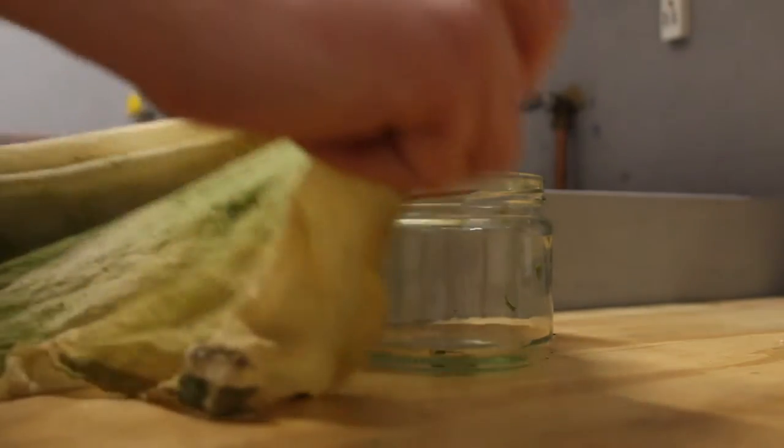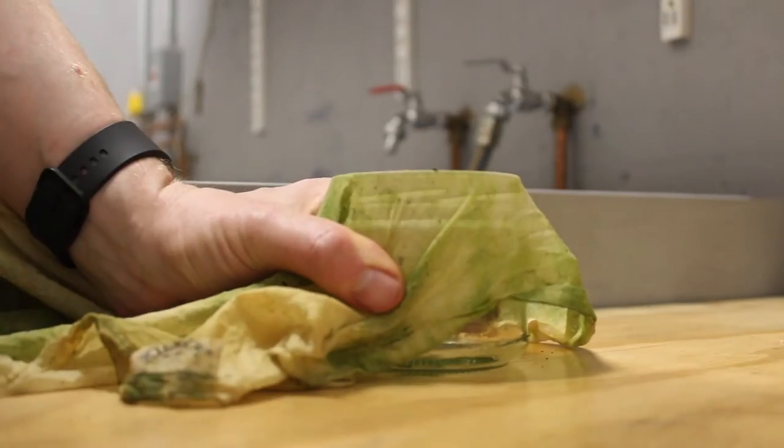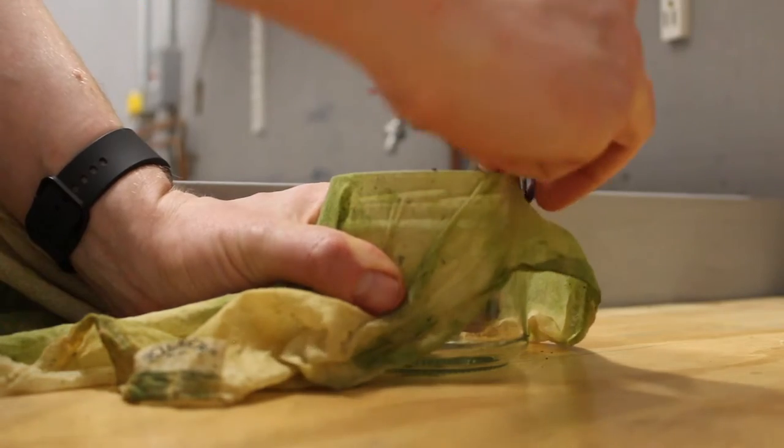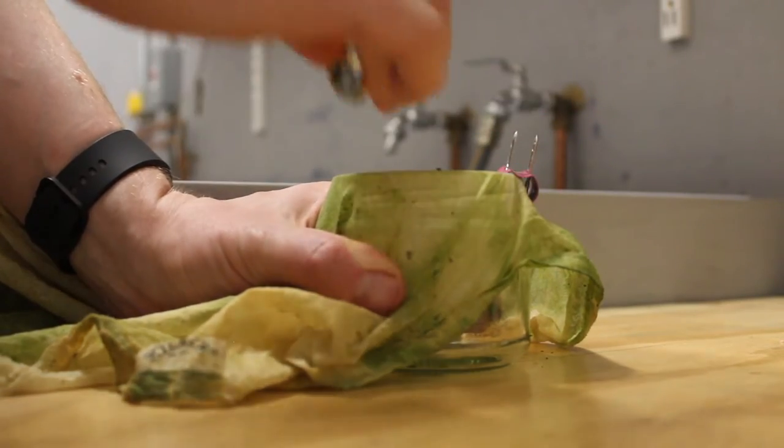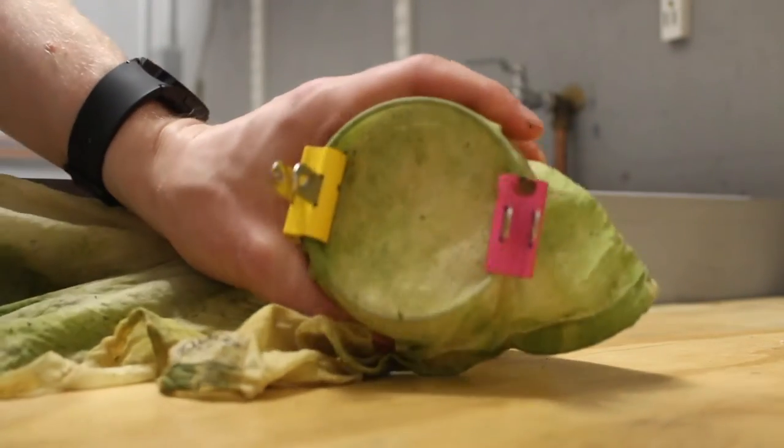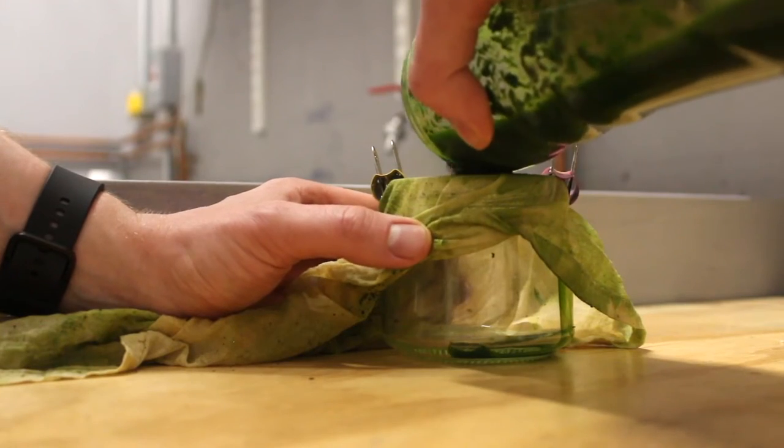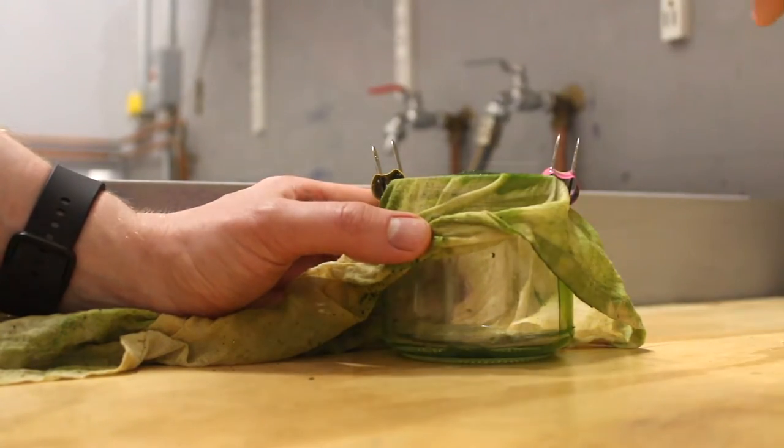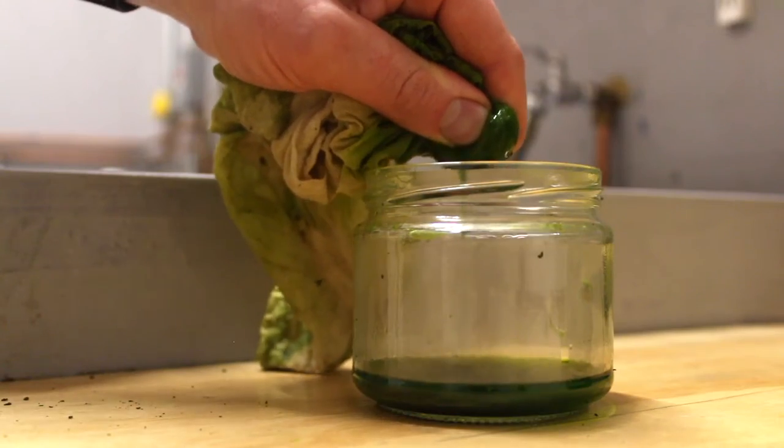Once your plants are nicely crushed and blended, you want to strain them using a cheesecloth or something similar to remove excess plant matter. So pour it through the cheesecloth and then give it a good squeeze to make sure you get out every last drop.